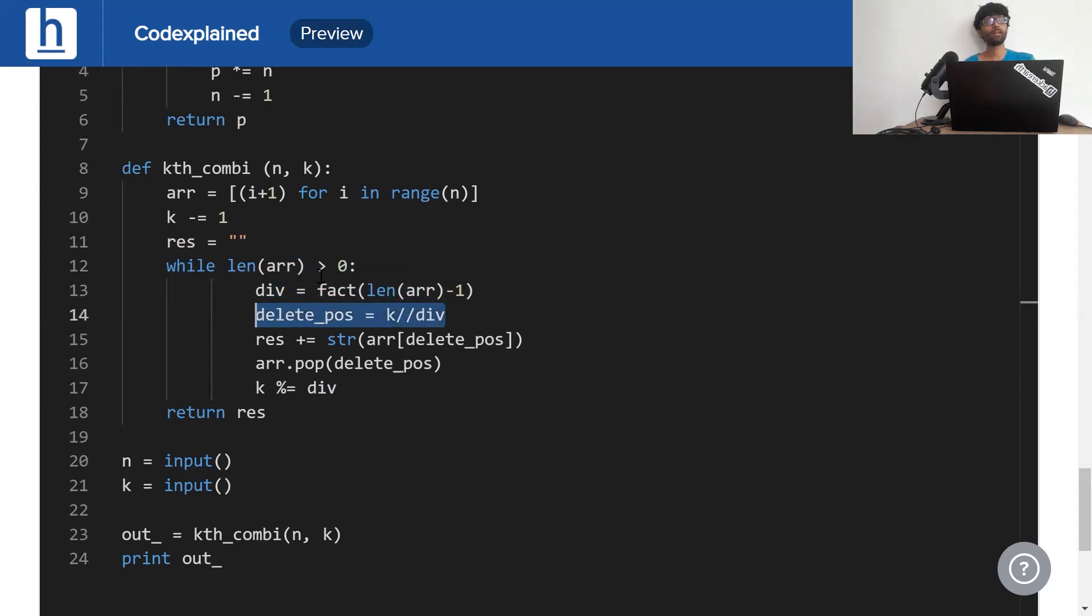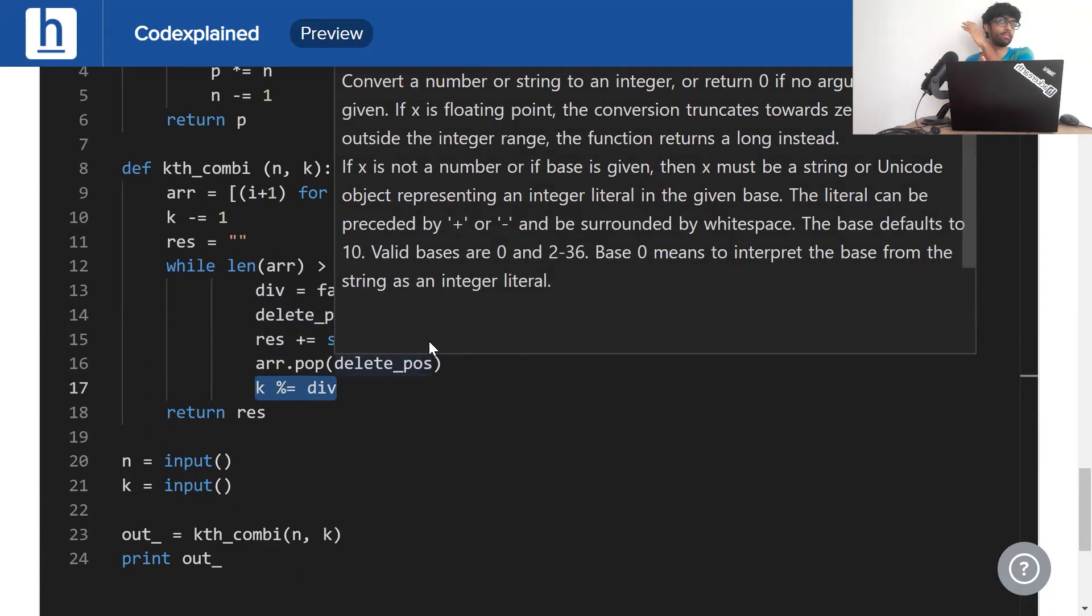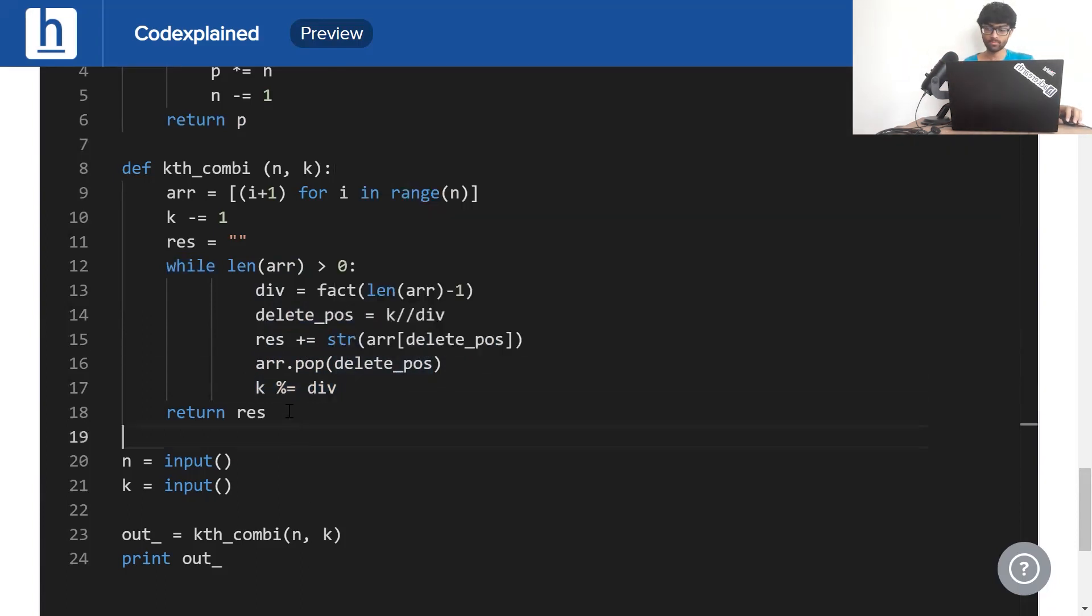Now while our array still has elements in it, first we find what (n-1) factorial is—that's the dividend. Following that, we find the number we've got to add into our final string—that's k by (n-1) factorial. Now don't get alarmed by this double division. In case you're not familiar with Python, that's just integer division. All you have to do in other languages is typecast or just leave it alone. So if you're using integer variables, it will automatically get typecast. We add that position to our result and remove that position from our array. Finally, we do k equals k modulo div in order to move our zero from the old block to the new block. Finally, we return our result. Let's see if this works.